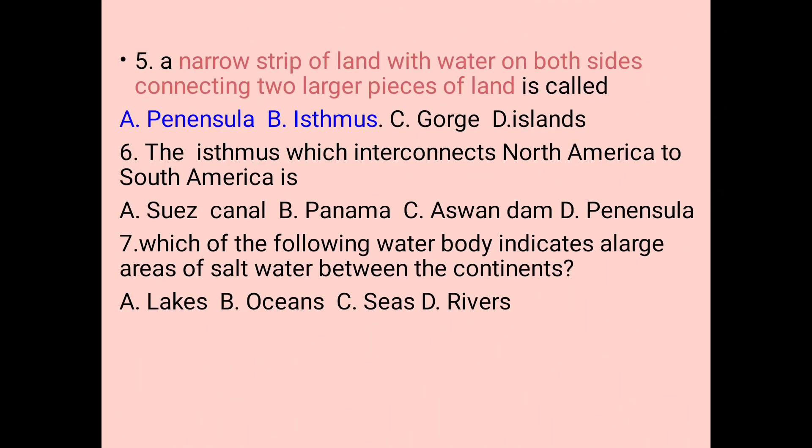Question number five: a narrow strip of land with water on both sides connecting two larger pieces of land is called: A. Peninsular, B. Isthmus, C. Gorge, D. Iceland. An isthmus is a narrow strip of land with water on both sides connecting larger pieces of land. The answer is B — the best example of an isthmus is Panama.